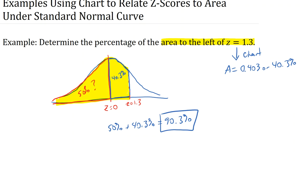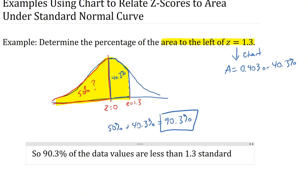To sort of interpret the answer to that question, what this means is 90.3 percent of the data values are less than positive 1.3 standard deviations above the mean. So it could be positive z-scores that are less than 1.3, and of course negative z-scores because they're definitely less than 1.3.